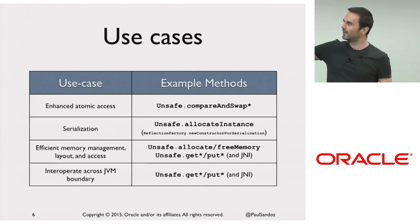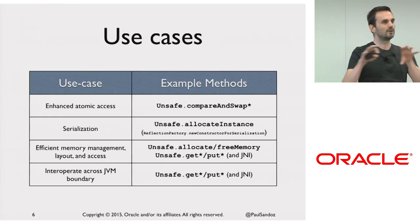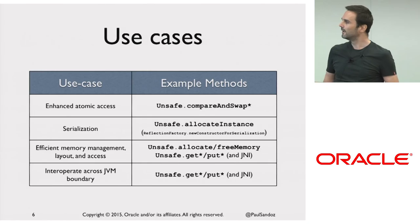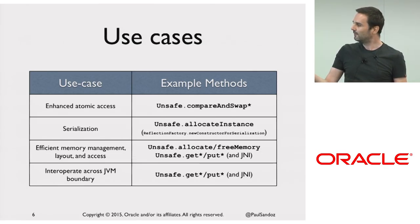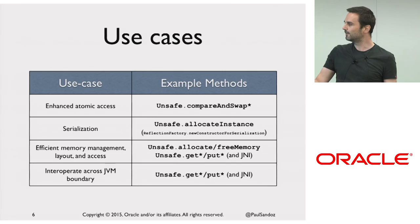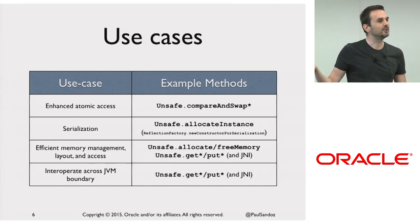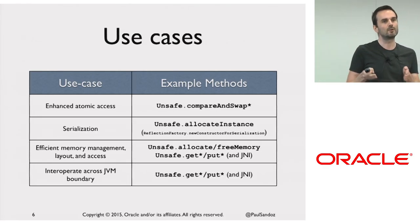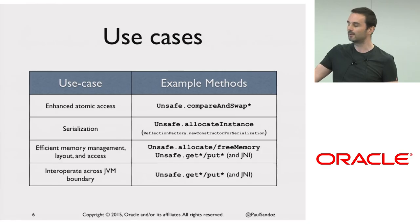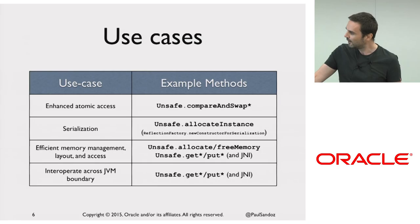I think we can categorize the use cases of unsafe into four broad general categories. We have enhanced atomic access — people use compare-and-swap and all sorts of stuff. We have interoperating across the JVM boundary — people use get/put, JNI. We have efficient memory layout and access — people use allocate, free memory, put/get, they want to hide from the GC. And there are lots of other use cases like serialization, mocking, proxying, where people use allocate instance.